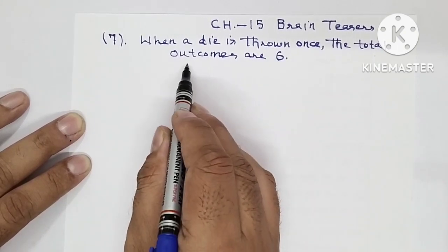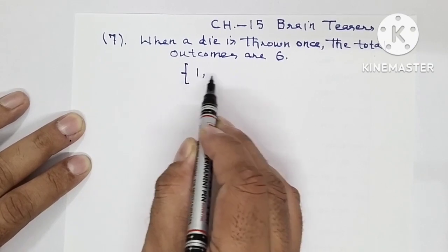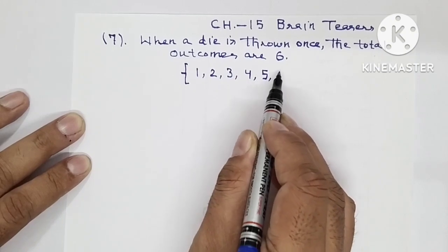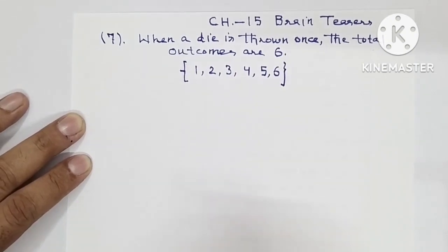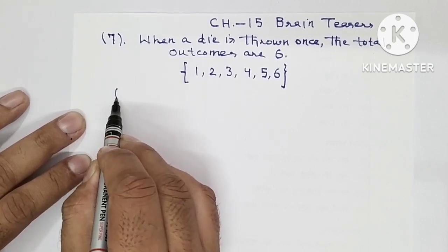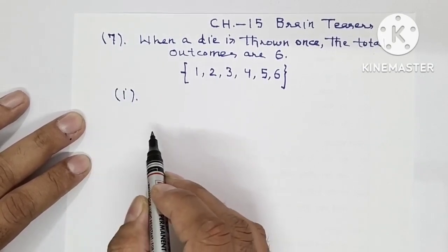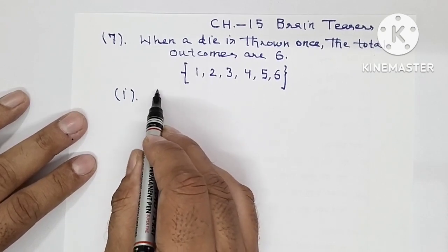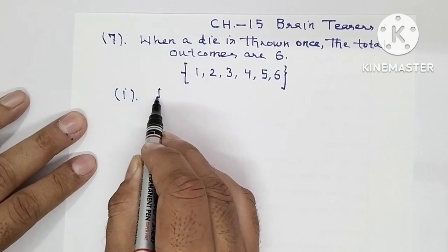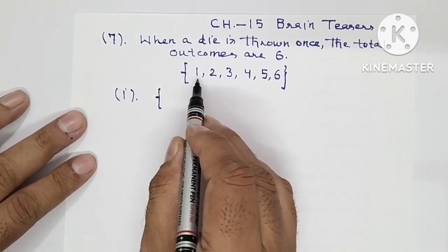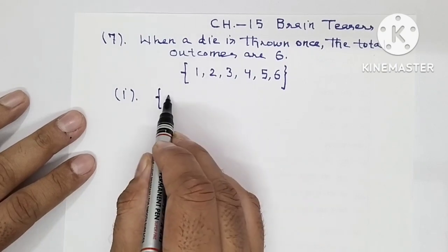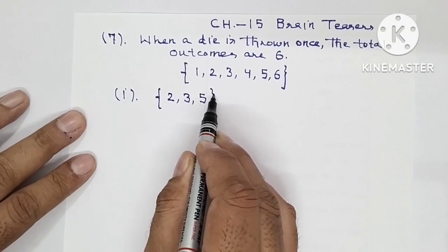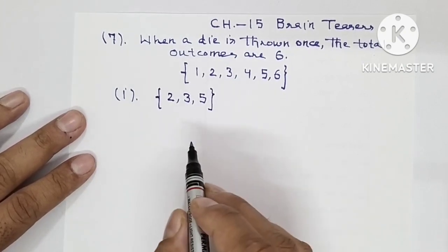These are the outcomes: 1, 2, 3, 4, 5, and 6 — these are the 6 outcomes. Now part number 1, we have to write the outcomes of an event getting a prime number. So 1 is neither prime nor composite. The prime numbers that appear are 2, 3, and 5. So there are 3 outcomes.